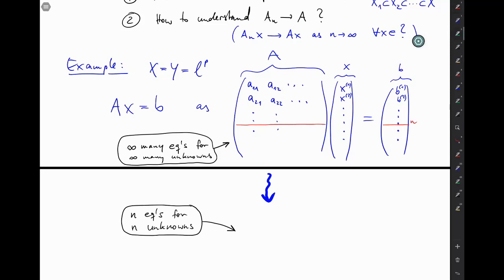And if you ignore all the unknowns after the nth, then you would of course in your matrix just cut off all the columns that come after number n here. And the same with rows.